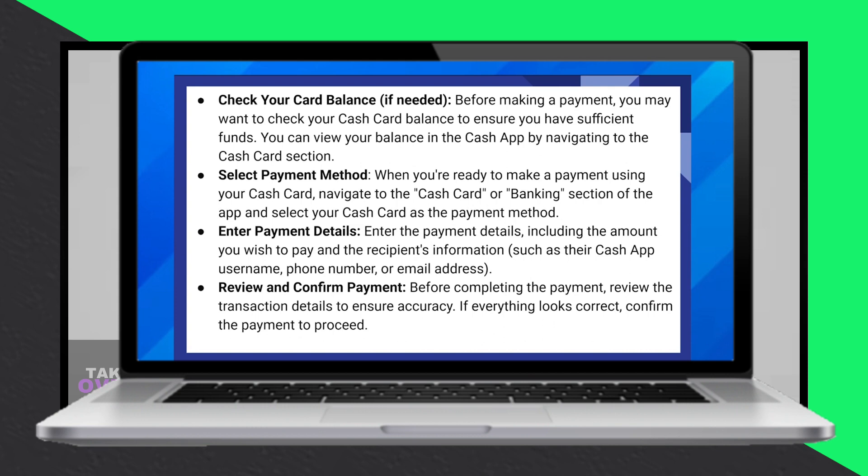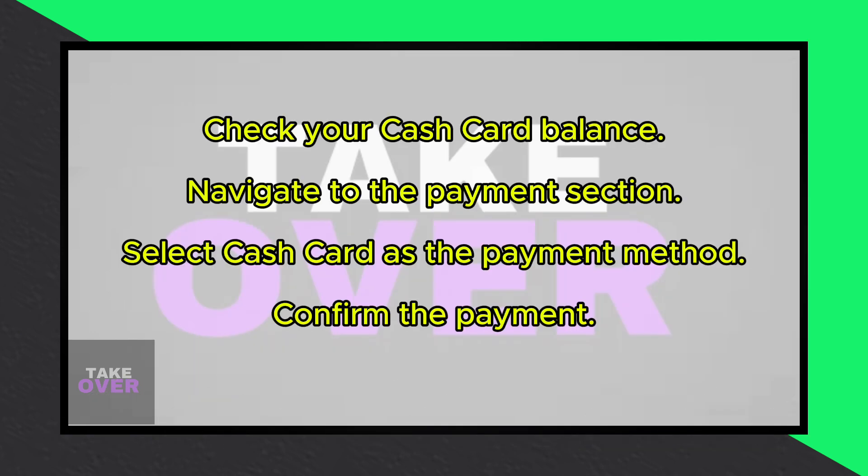When you're ready to make a payment, navigate to the Cash Card or Banking section of the app and select your Cash Card as the payment method. Enter the payment details including the amount and recipient's information. Review the transaction details for accuracy.